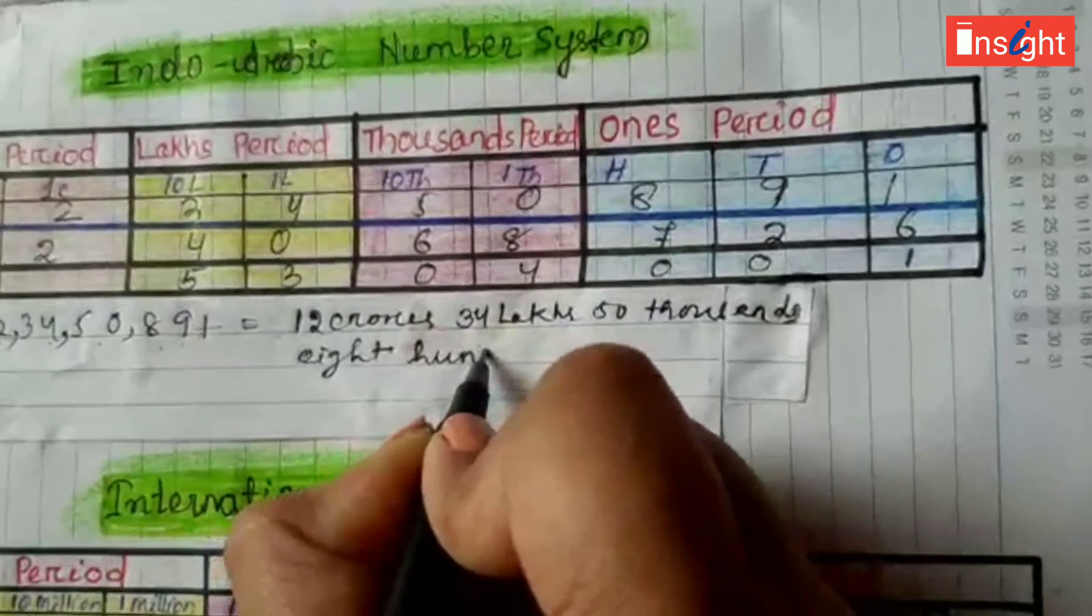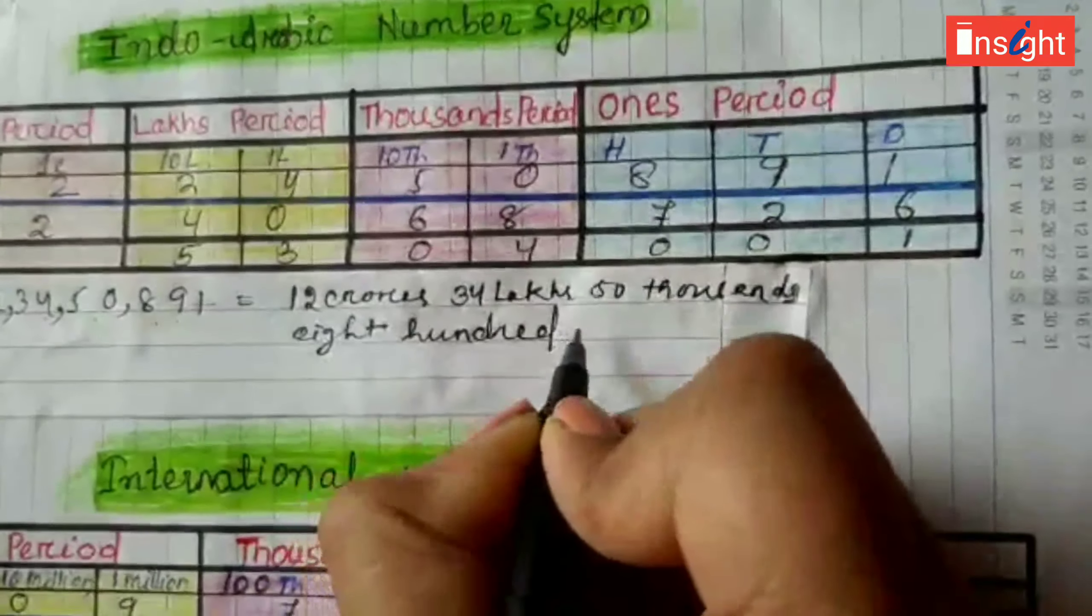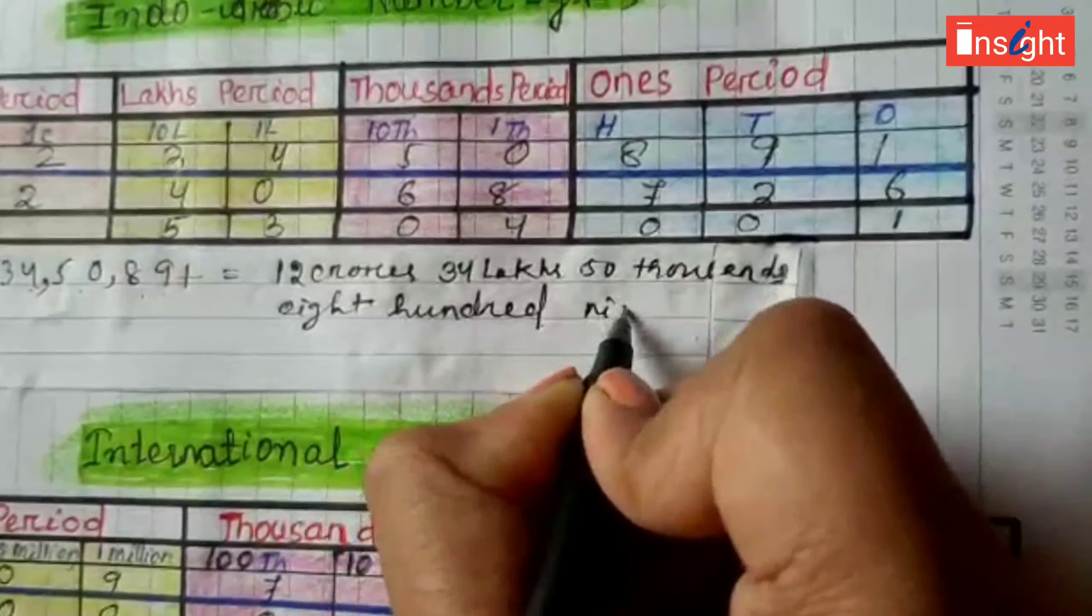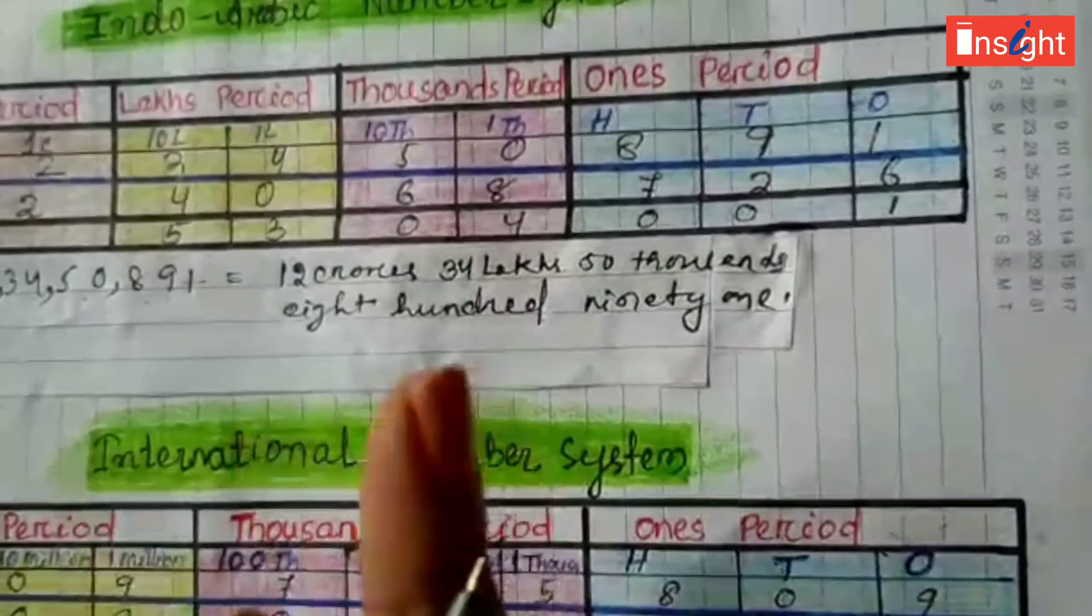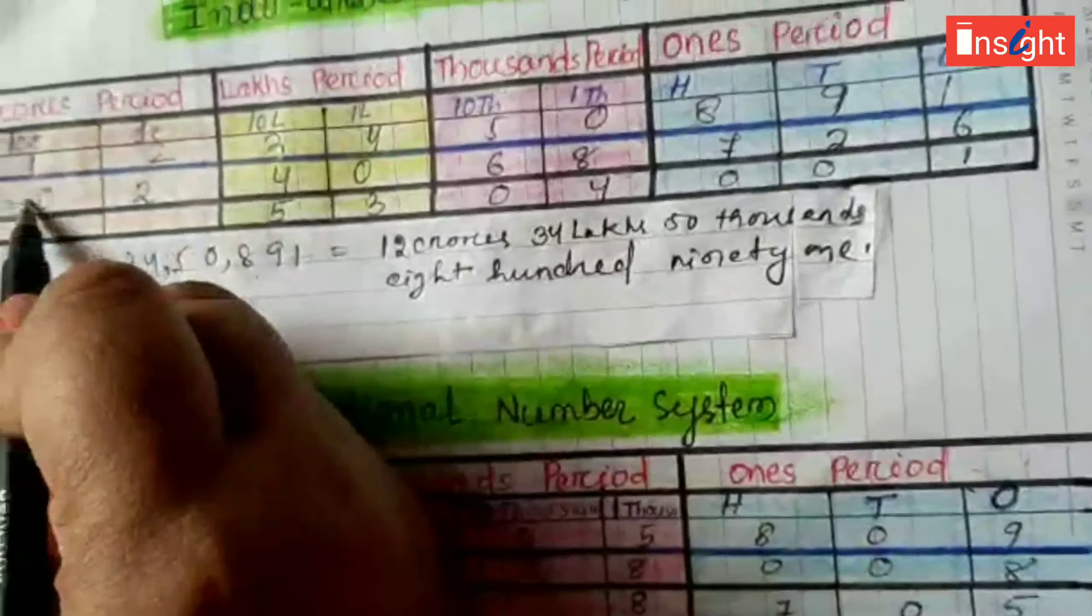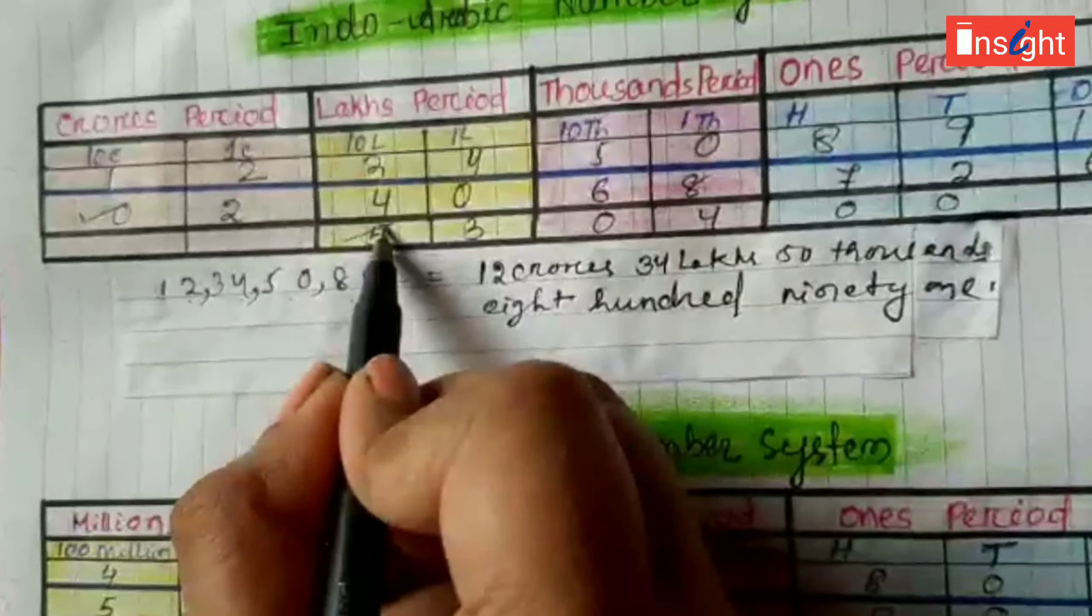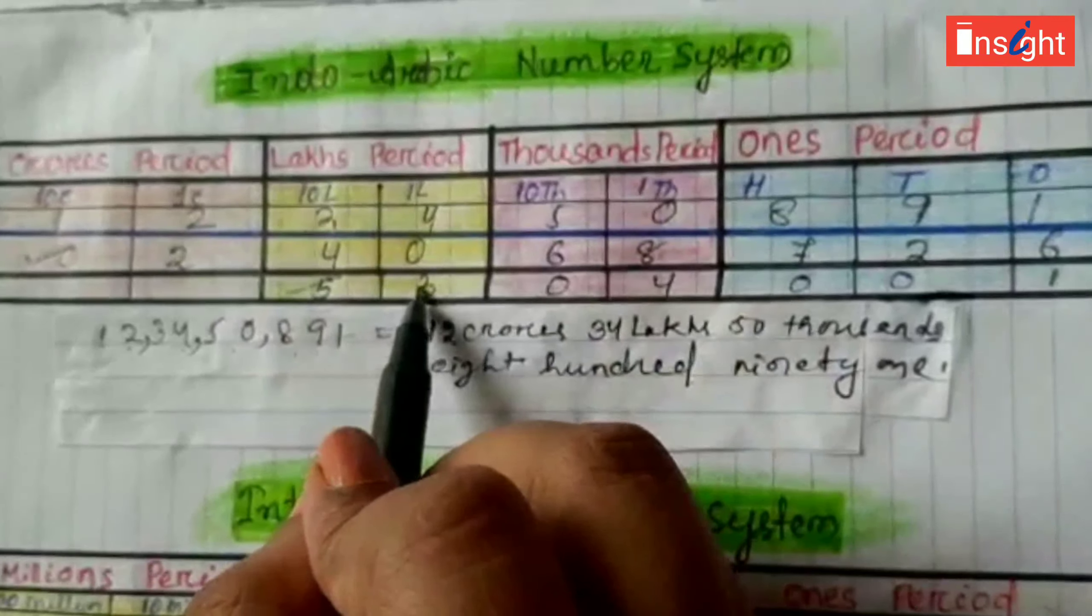Eight hundred ninety-one. Simple. And this one, three hundred ninety-one, you can also do by this Indo-Arabic number system formula.